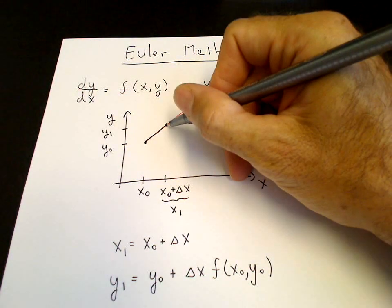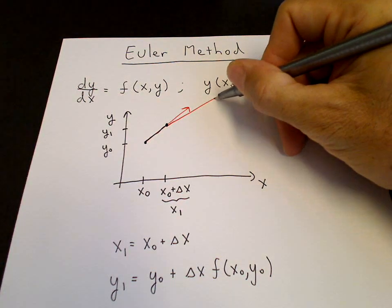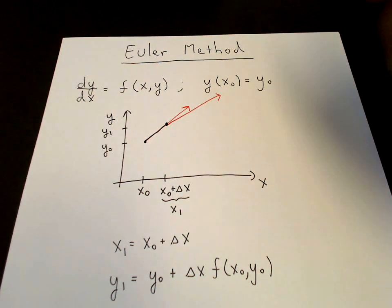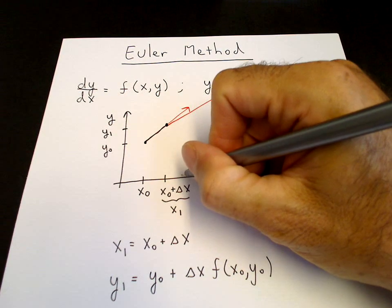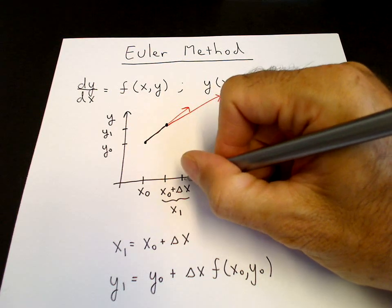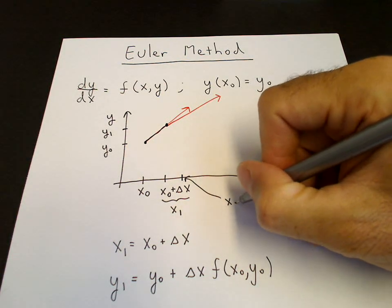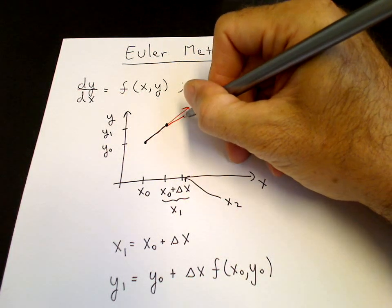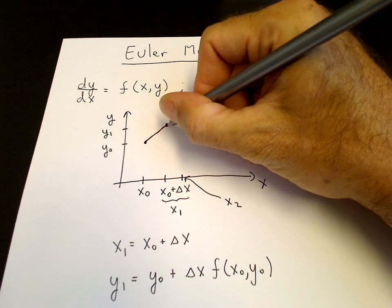then the slope could be slightly less. So it could be something like this. The new slope of the tangent line. So the value here is our x₂.